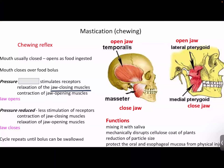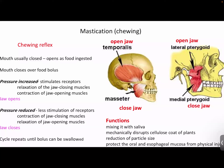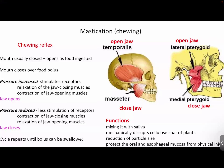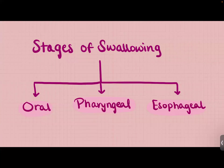Now let me test you: what happens to the pressure for it to stimulate the chewing process — does the pressure increase or decrease? The correct answer is increase, because when there's food in the oral cavity it increases the pressure and starts the reflex. The jaw-closing muscles are the masseter and medial pterygoid. Now let's talk about the stages of swallowing — we have three stages: oral, pharyngeal, and esophageal.